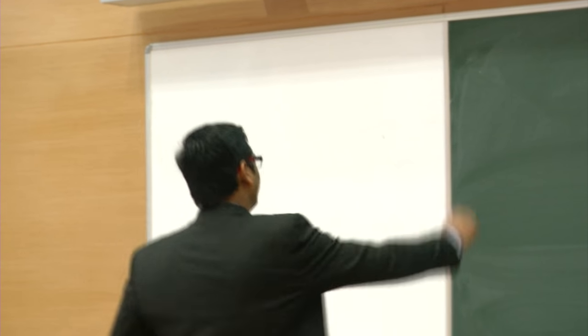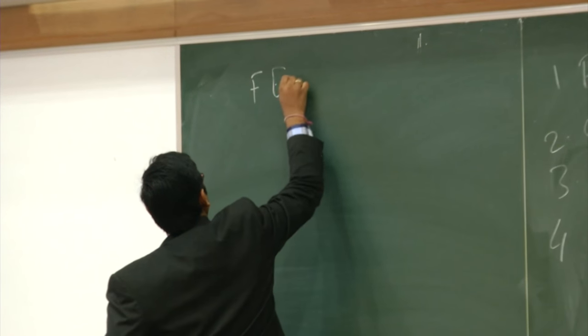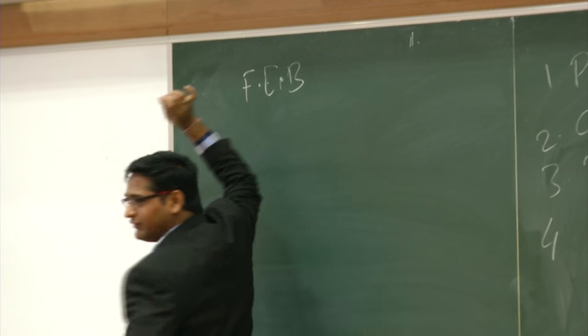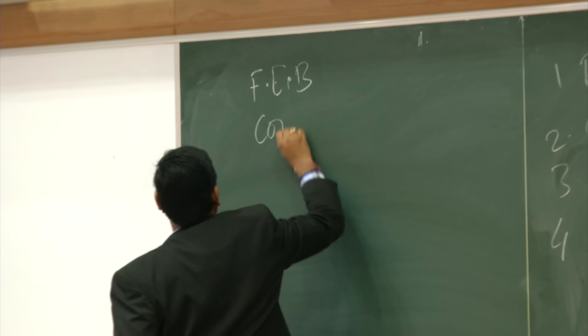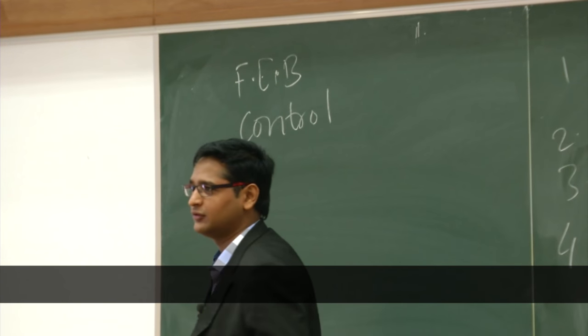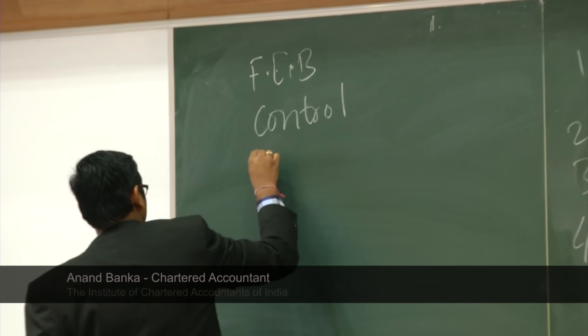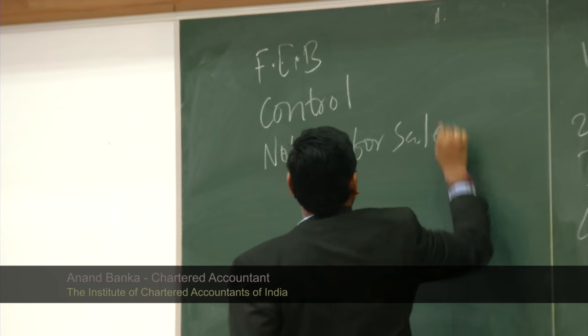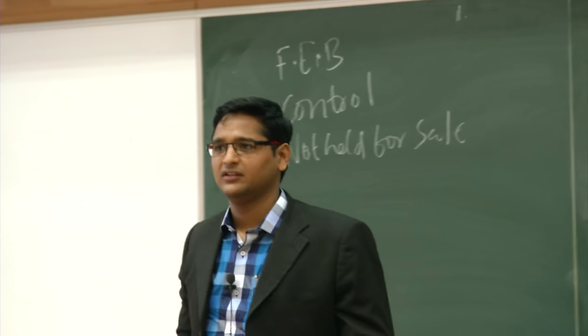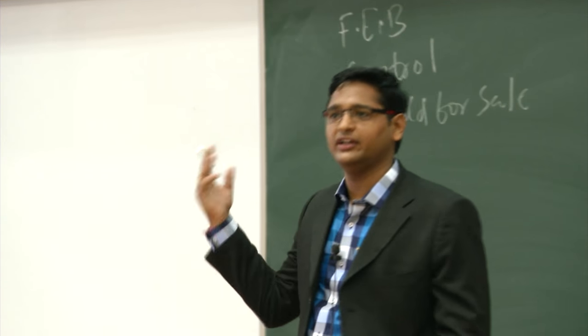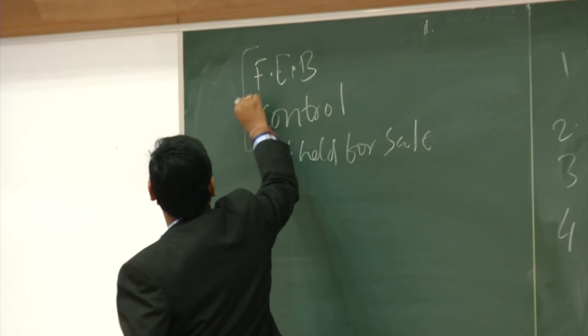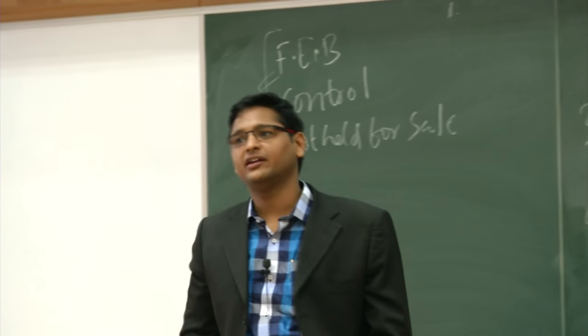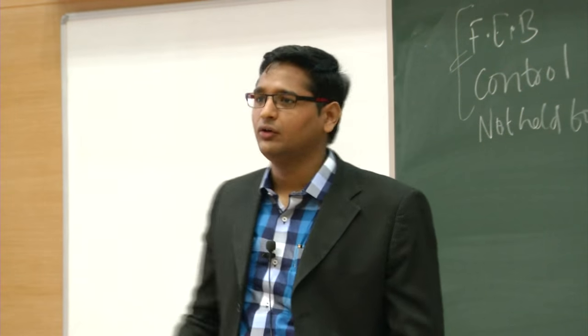There is a future economic benefit — future means more than one year. You have control over it, meaning you can decide when to use it and how to use it. And it is not held for sale in ordinary course of business. If these three conditions are fulfilled, it qualifies as a fixed or intangible asset. Tangible assets are something which can be seen; intangible assets are something which cannot be seen. So whether an e-journal and database subscription is a software or intangible kind of thing depends on these criteria.